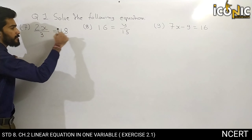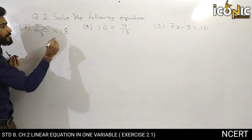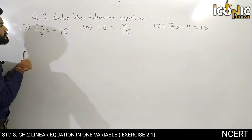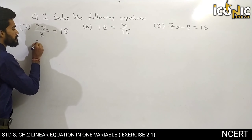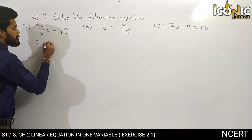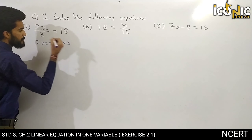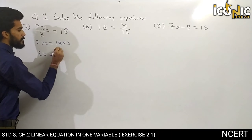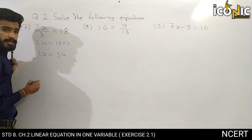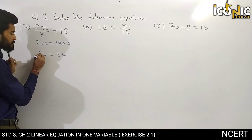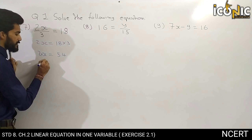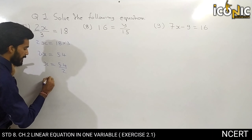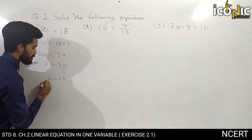First we will transpose the 3 to the other side. So 2x is equal to 18 multiplied by 3. Multiply both: 2x is equal to 54. Now 2 is in multiplication so it goes to division: x is equal to 54 by 2, so x is equal to 27.